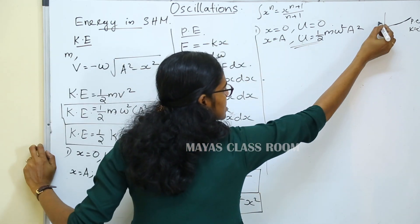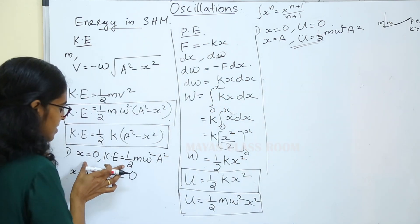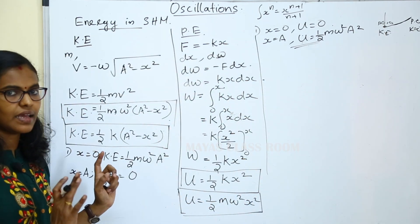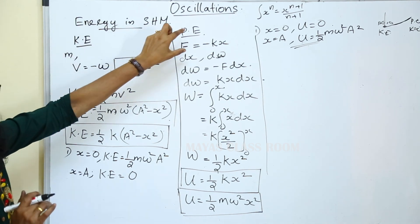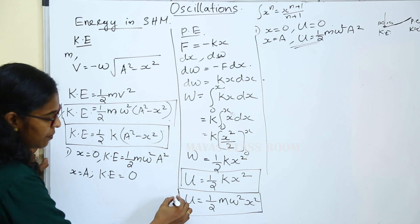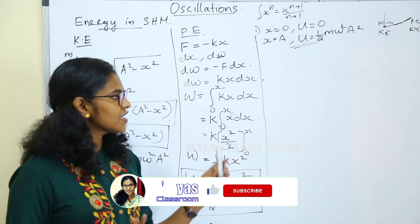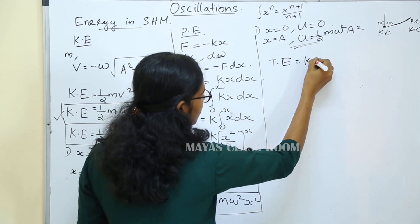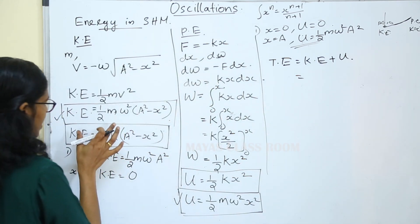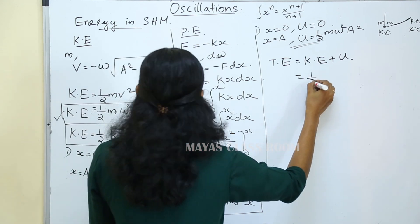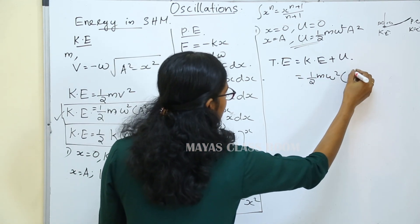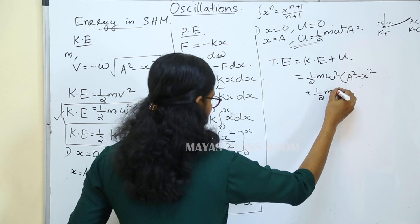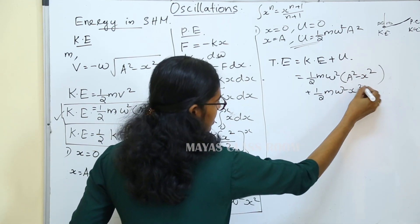Now in simple harmonic motion, we have the kinetic energy and the potential energy equations. The total energy is the sum of kinetic energy and potential energy. Total energy equals half m omega squared into (a squared minus x squared) plus half m omega squared into x squared.